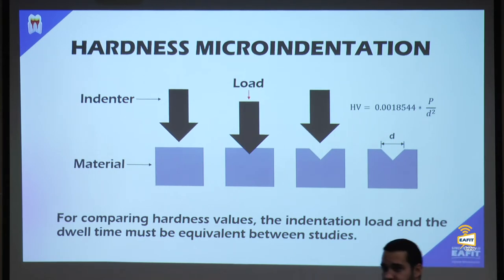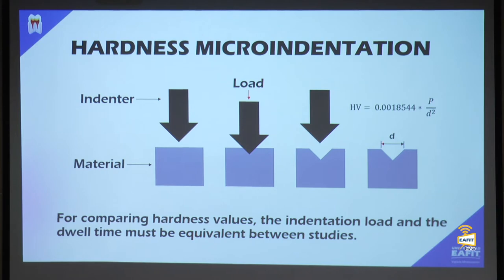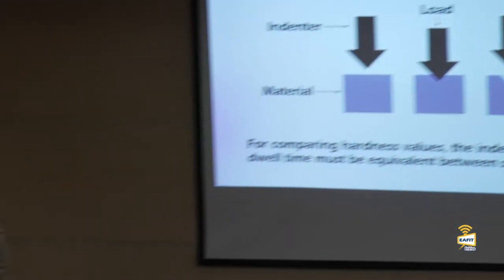Hardness is characterized by pressing the indenter into the material under a set load, holding it for a dwell time, then removing the load to leave a print. By measuring both diagonals of the print and applying the standard formula, we get hardness in units of pascals — a relationship between the force applied and the contact area.